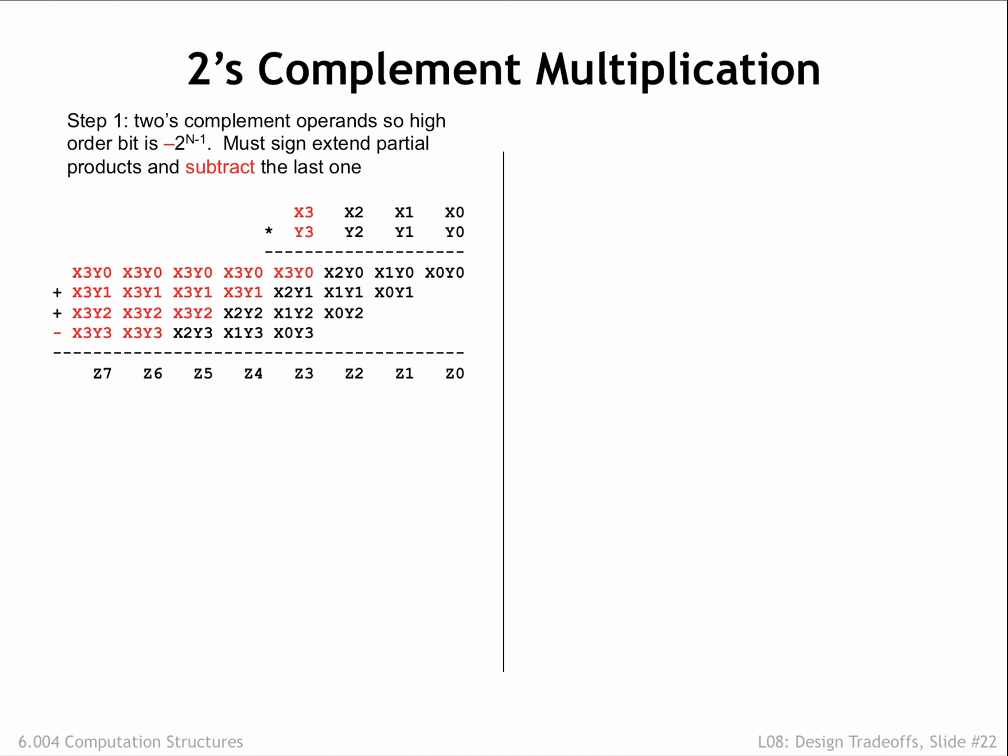With a 2's complement multiplier and multiplicand, the higher-order bit of each has negative weight. So when adding together the partial products, we'll need to sign-extend each of the n-bit partial products to the full n plus m bit width of the addition. This will ensure that a negative partial product is properly treated when doing the addition.